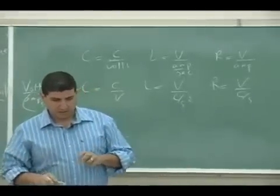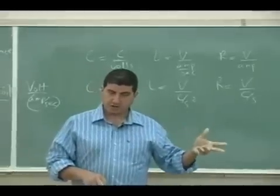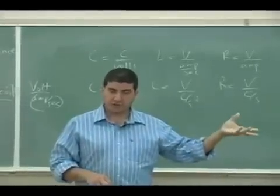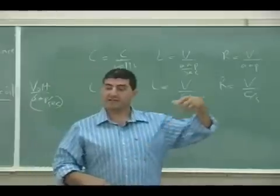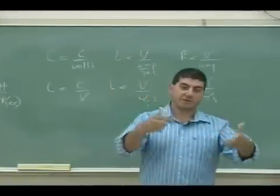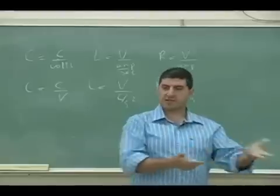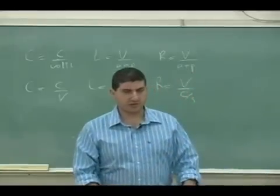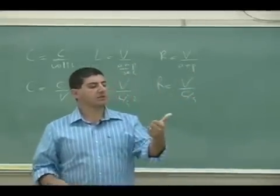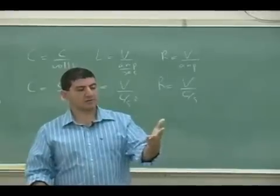Coulomb is an important unit — how much charge you can store is the capacitance. The derivative of charge is the current, so resistance depends on how much current you can allow. Inductance is the derivative of current, which tells you: if the current changes, what voltage will be induced in the inductor? So Coulomb, its derivative, and its second derivative are important quantities.